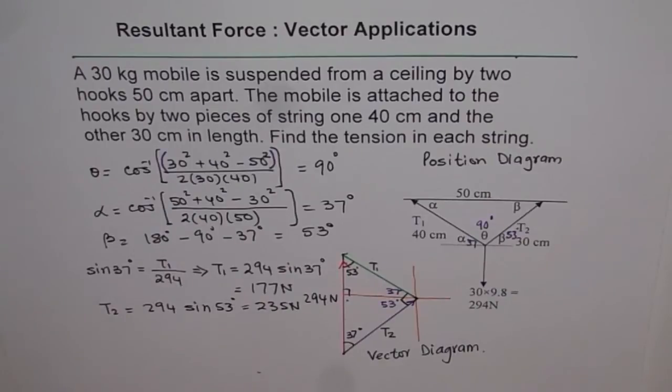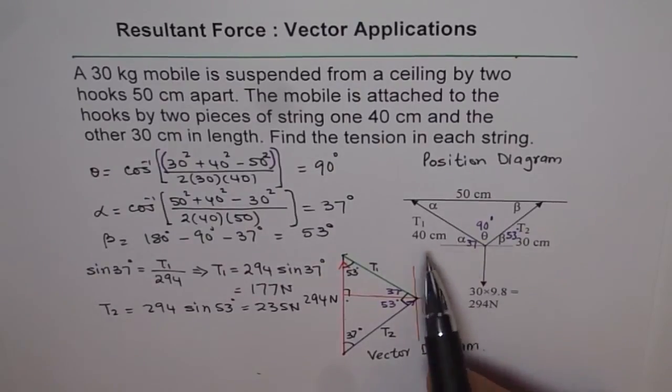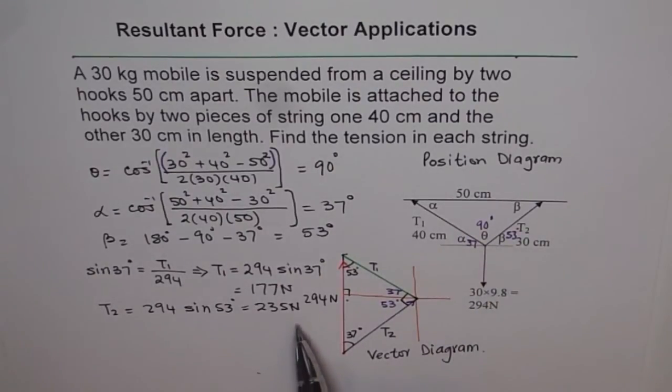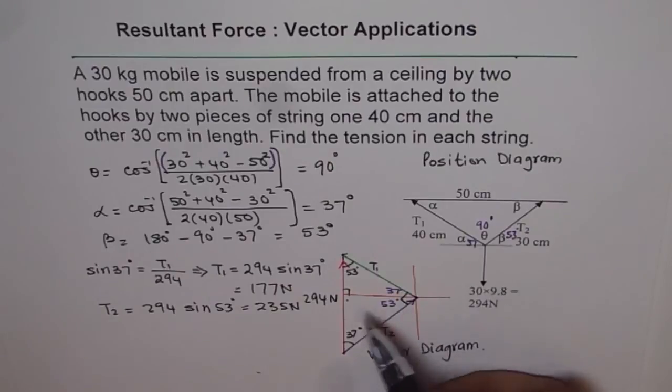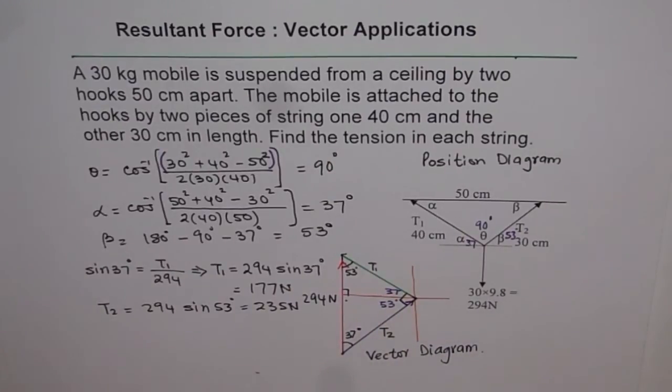I have rounded my answers to the whole numbers. The question is not specifying and since all the dimensions given to us are whole numbers, I prefer to do a whole number here. This question is unique in the sense that we have not given you angles, only the sides are given to you. So you find the angles first using cosine law as we did from the position diagram.